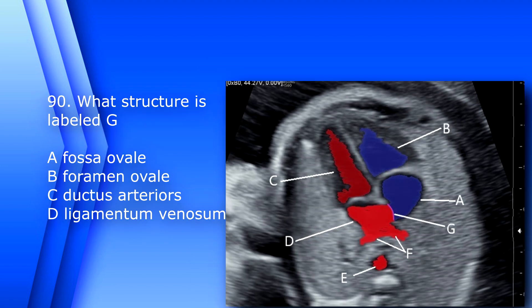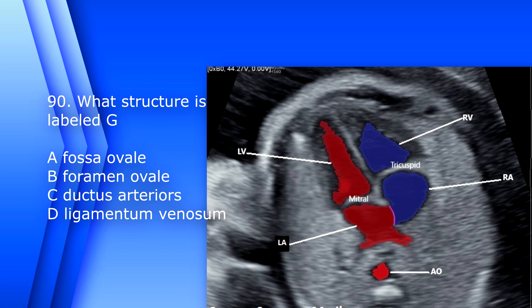Question 90. What structure is labeled G? A. Fossa ovale. B. Foramen ovale. C. Ductus arteriosus. D. Ligamentum venosum. The answer is B, foramen ovale.